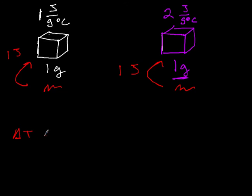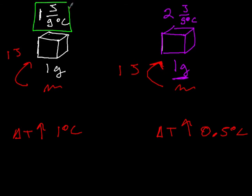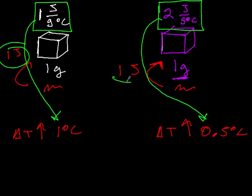If I put a flame underneath and impart one joule of energy into both substances, the first will increase by one degree Celsius because I'm giving it the one joule it needs for a one degree temperature change. The second will still increase in temperature, but it needs two joules to go up by one degree Celsius — I'm only giving it one joule, so it will go up by only half a degree Celsius. Note the relationship: a low heat capacity produces a larger temperature change, while a high heat capacity produces a lower temperature change when the energy input is equal.